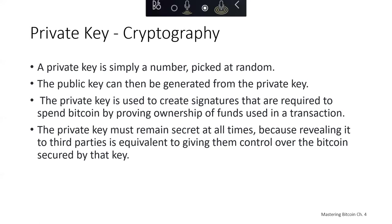A private key is simply a number picked at random. Ownership and control over the private key is the root of user control over all funds associated with the corresponding Bitcoin address. The private key is used to create signatures required to spend Bitcoin by proving ownership of funds. The private key should remain secret at all times, because revealing it to third parties is equivalent to giving them control over the Bitcoin secured by that key. The private key should also be backed up and protected from accidental loss — if it's lost, it can't be recovered and the funds secured by it will be lost.